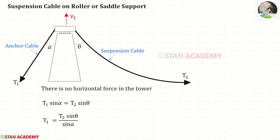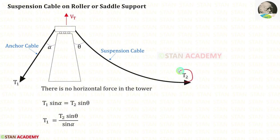Let us find the horizontal force on the left side. On the left side we have T1. We have to resolve this into horizontal. The angle is alpha, so when we resolve T1 in the horizontal direction it will be T1 sin alpha. On the right side we have T2. We have to resolve this into horizontal. Here the angle is theta, so when we resolve in the horizontal direction we will get T2 sin theta. We know that the forces on the left side and on the right side should be the same.